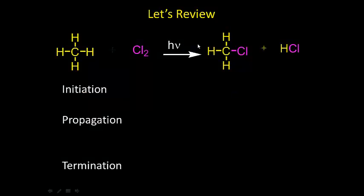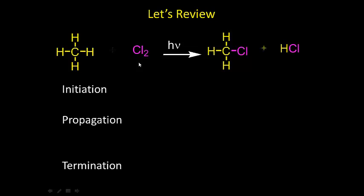We also talked about this reaction with methane and chlorine. Let's review the initiation step. Chlorine is irradiated here—anytime you see hν that means light—and when that happens, this bond breaks homolytically, one electron here, one electron here, to give you two chlorine radicals.